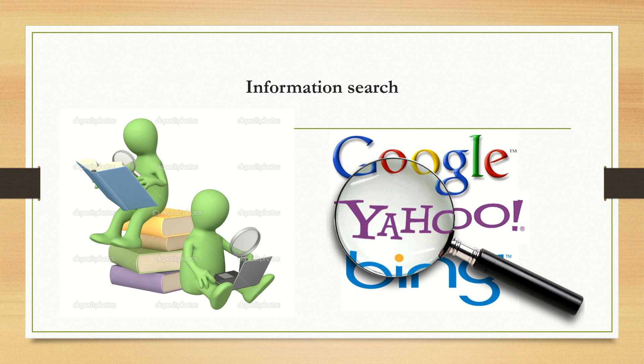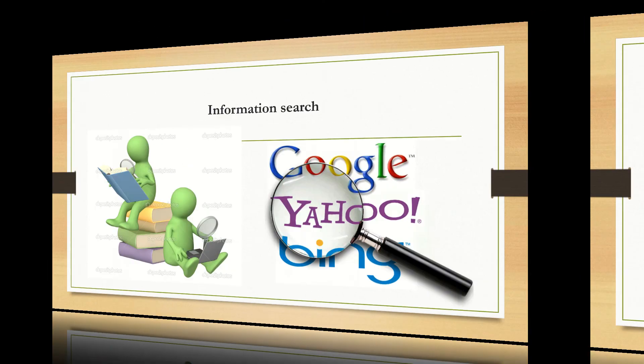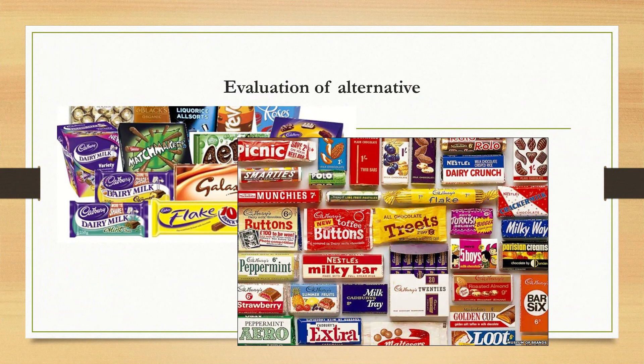Information search — how do you go about it? External information search or internal information search, which I'll give a detailed explanation of as we go further. Evaluation of alternatives: I'm hungry, where do I go and what do I eat? Do I need idli? Do I need dosa? Do I need parota and paneer curry? Or what I'd love to cherish — paneer fried rice with gobi manchurian? All these are evaluation of alternatives.